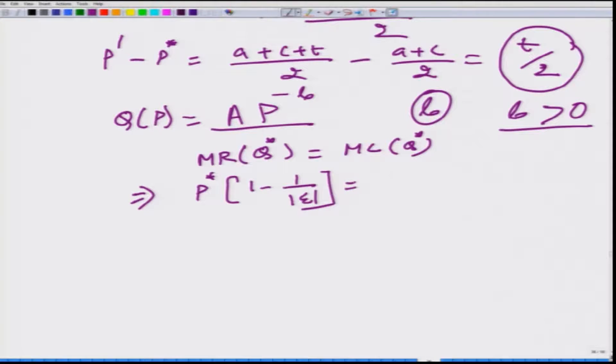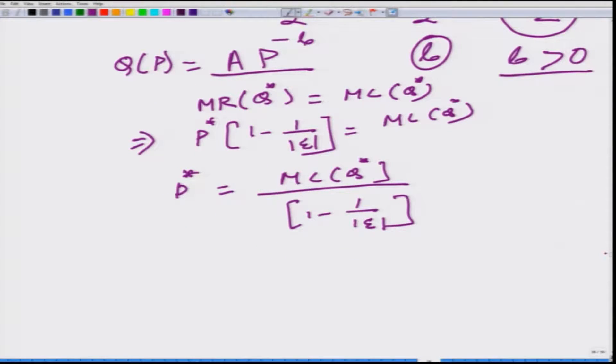We have already calculated the formula which is equal to P*(1 - 1/price elasticity of demand) = MC(Q*). Let us make some simplifying assumption, let us say marginal cost is fixed everywhere at c. So in this case, the price is going to be equal to c/(1-1/b).